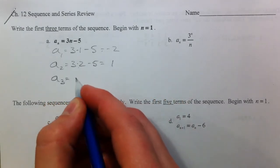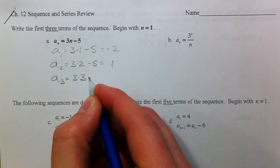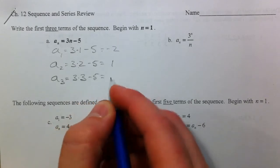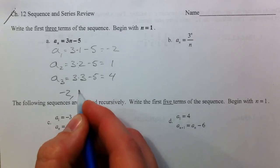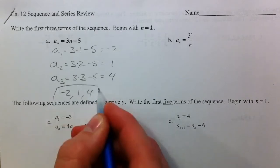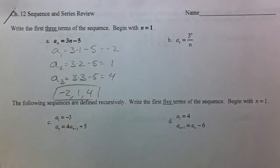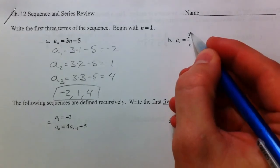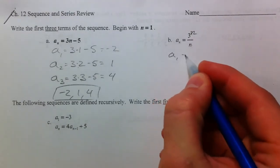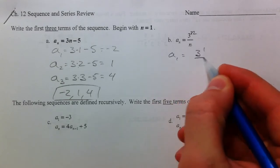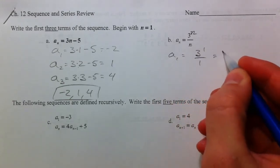And a sub 3, plug in 3 for n. 9 minus 5 is 4. So the first three terms are negative 2, 1, and 4. And we can keep going. Same thing for this, this is 3 to the nth power divided by n. So our first term is 3 to the first divided by 1, which is 3.